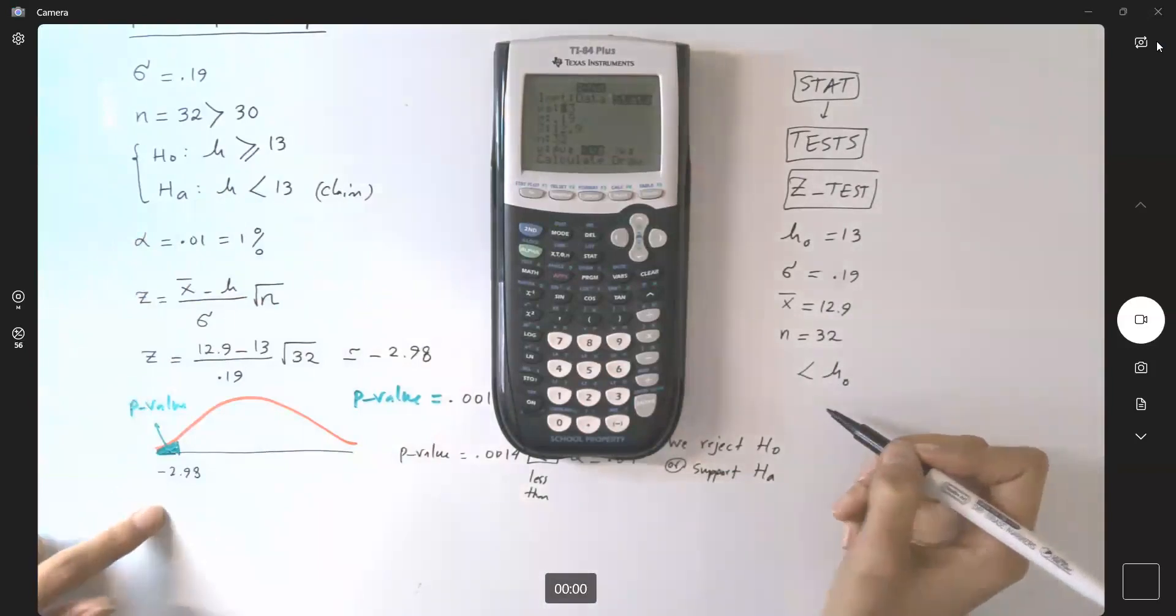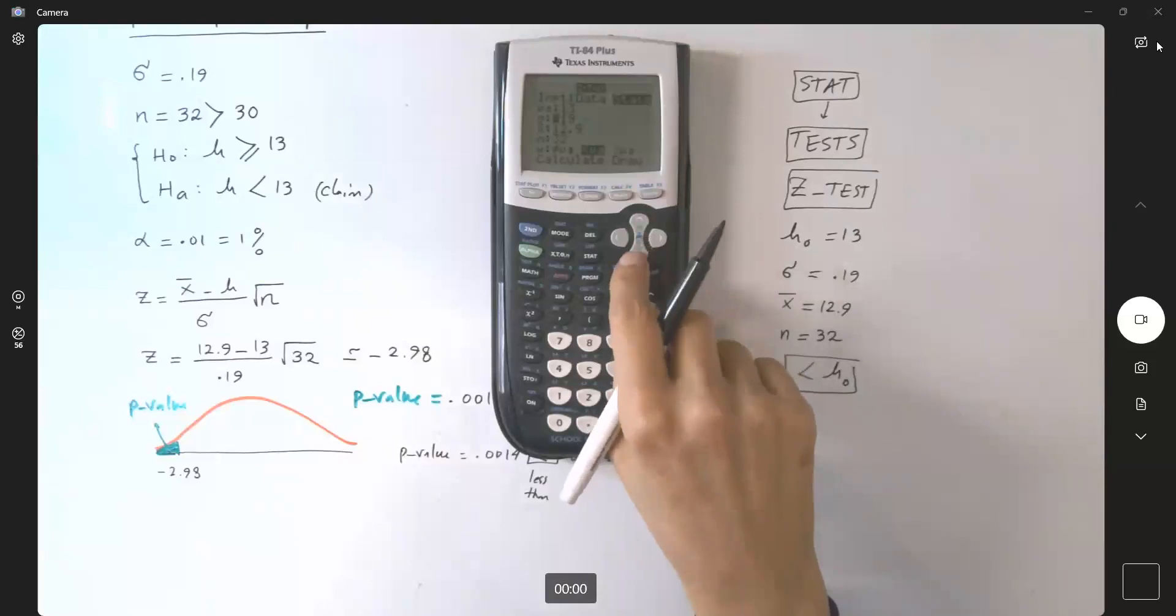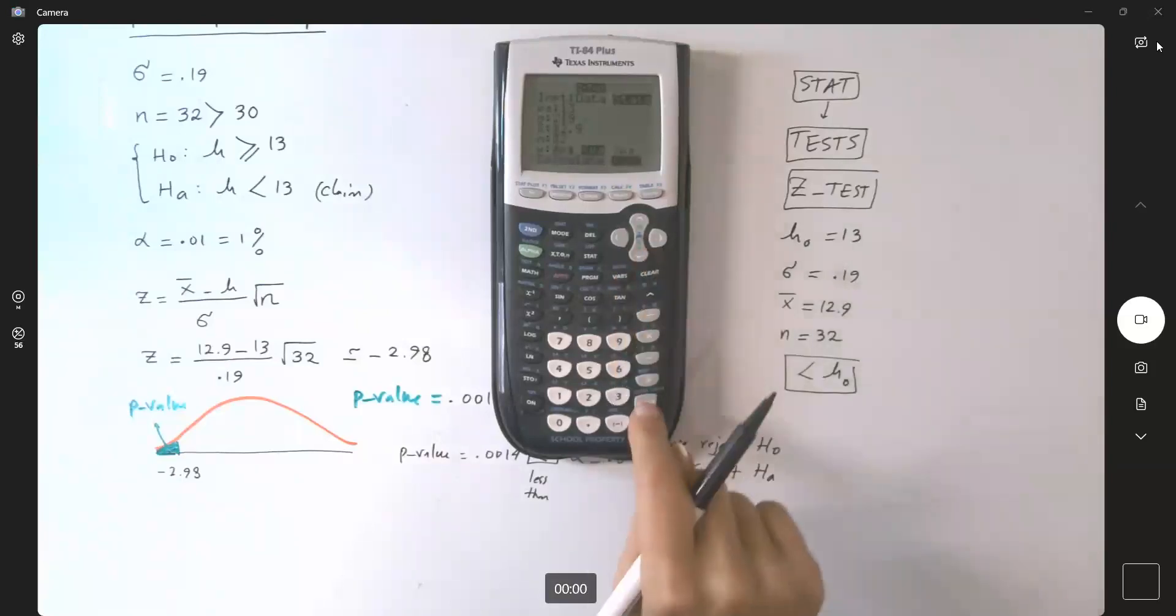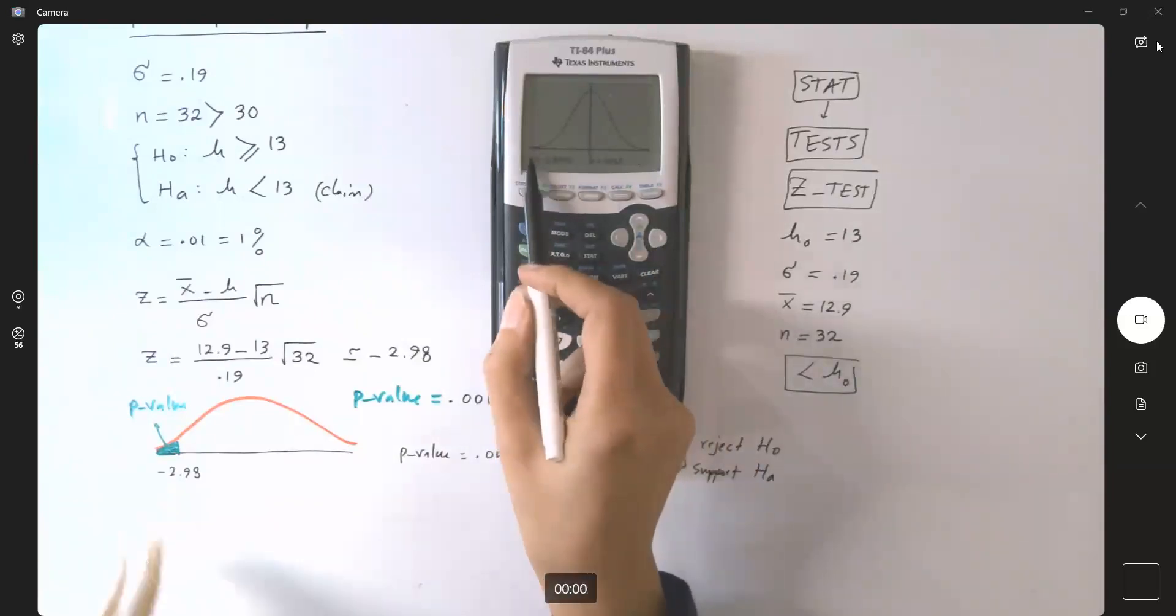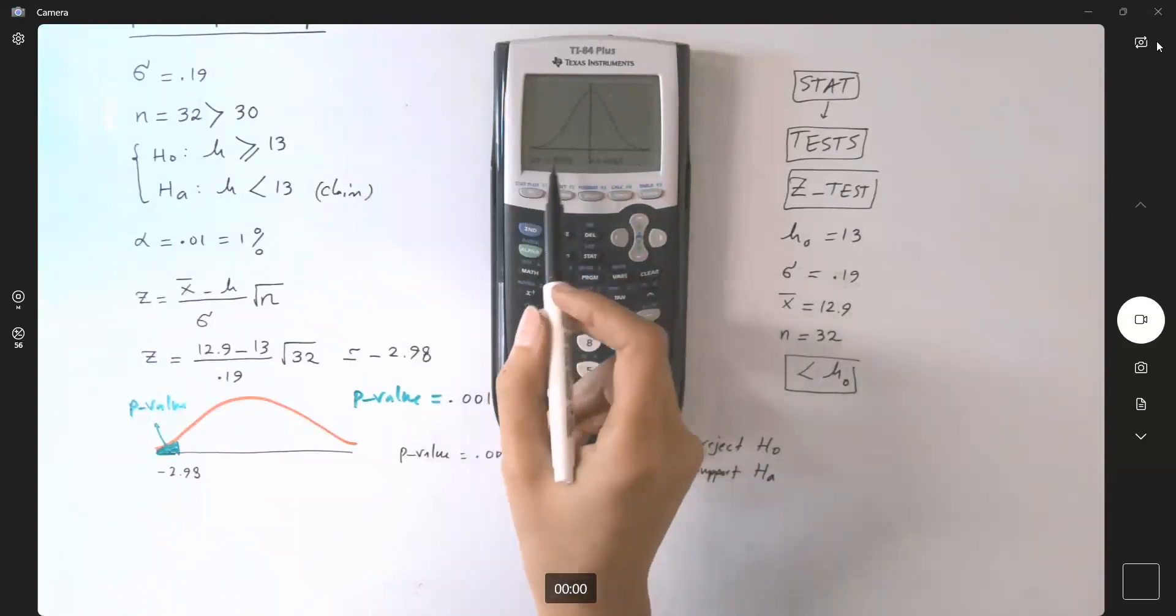Less than, left-tailed graph, that's when you select less than. You can also use the graph. This little area on the far left gives you the p-value, and this is your z-test.